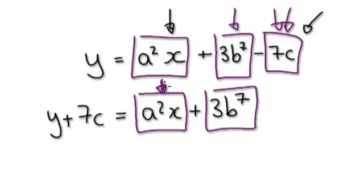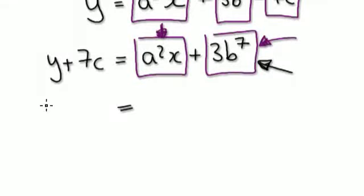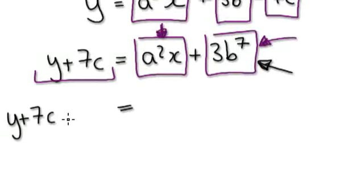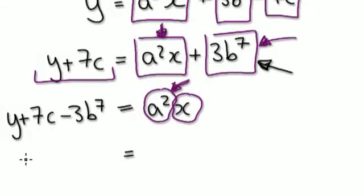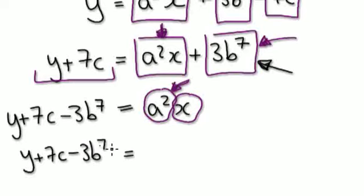You would then visualize it as this: you're trying to make x the subject, x is stuck in this bubble here. So you would kill off this bubble — take away this bubble inside your mind. So it would be y plus 7c, take away 3b to the power of 7, equals a squared x. Now visualize it as this bubble multiplying this bubble here. You're trying to get x on its own, so divide both sides by a squared. Take the whole lot down: y plus 7c minus 3b to the power of 7, over a squared — and then x is on its own.